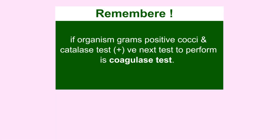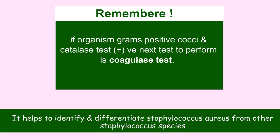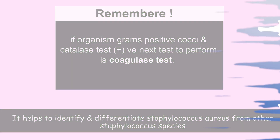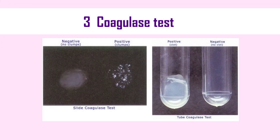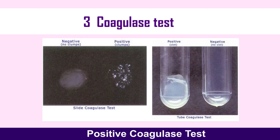Remember: if an organism is gram-positive cocci and catalase-test positive, the next test to perform is the coagulase test. It helps to identify and differentiate Staphylococcus aureus from other Staphylococcus species. Staphylococcus aureus gives a positive tube coagulase test result.